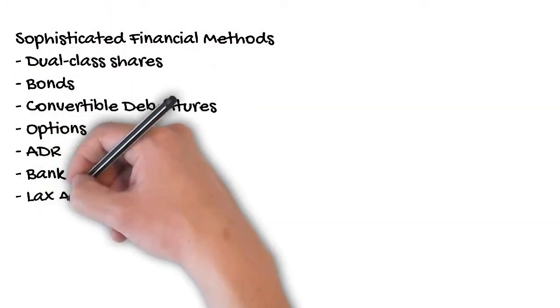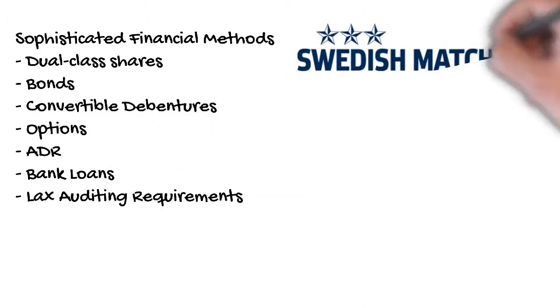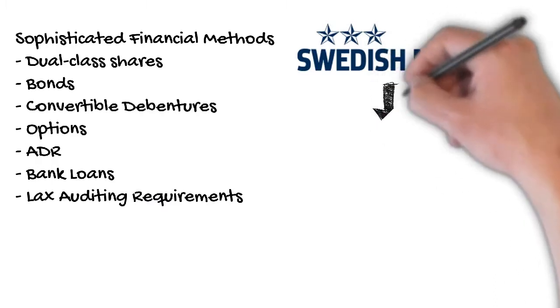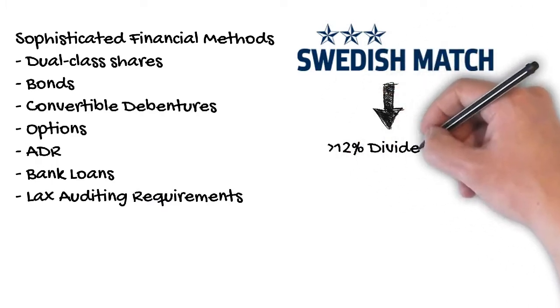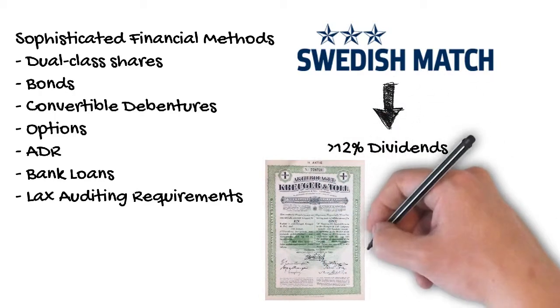He also exploited the relatively lax auditing requirements for balance sheets to move funds around all these companies, promising double-digit returns on investments. Ivar Kreuger was constantly engaging in the process of raising funds and paying off earlier investors.